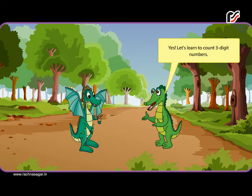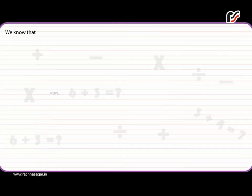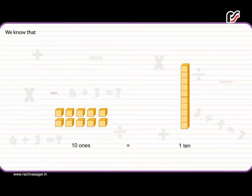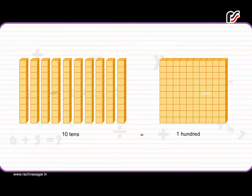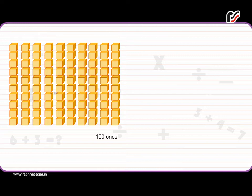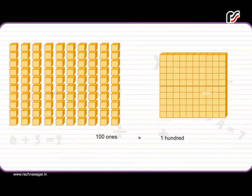Let's learn to count three-digit numbers. We know that 10 ones is equal to 10, and 10 tens is equal to 100. 100 ones is equal to 100.